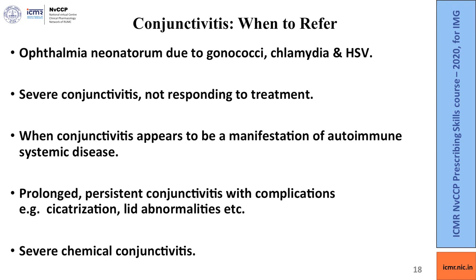It is important in any disease to know when you cannot help the patient further and when you should refer a patient. In case of conjunctivitis, patients who should be referred include those with ophthalmia neonatorum, which could be due to gonococci, chlamydia or herpes simplex virus — these need specialist care of the neonate and advice and treatment of the parents. In addition, patients with severe conjunctivitis not responding to treatment, or when conjunctivitis appears to be a manifestation of an autoimmune disease like Reiter's disease, should be referred. Also, if there is prolonged persistent conjunctivitis with complications like cicatrization or lid abnormalities, these should be referred, and cases of severe chemical conjunctivitis should be referred to an ophthalmologist.